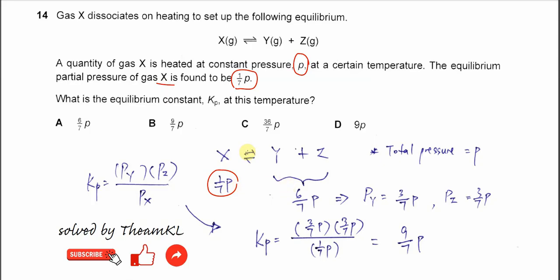We know that the moles of Y and Z must be equal because they're produced by X and have the same mole ratio. So the partial pressure of Y and Z must be 3 over 7 P each, because they have the same mole ratio and are produced from X.